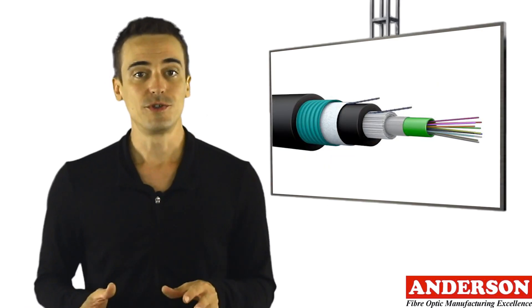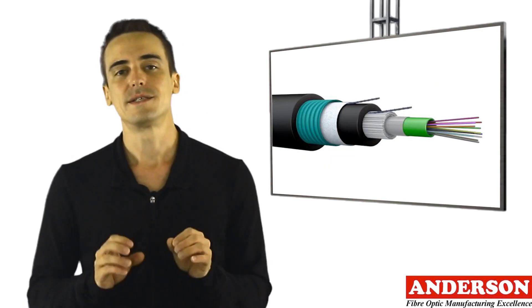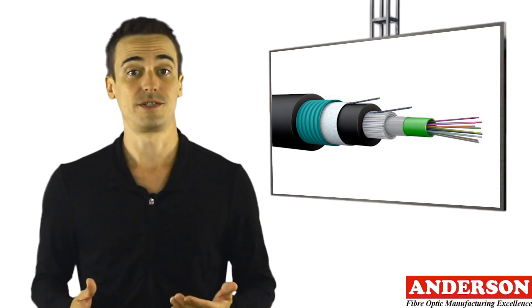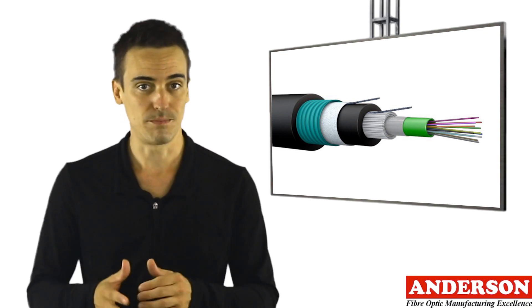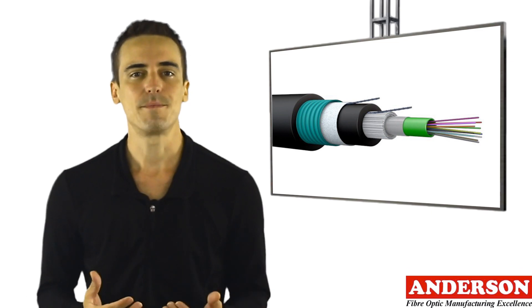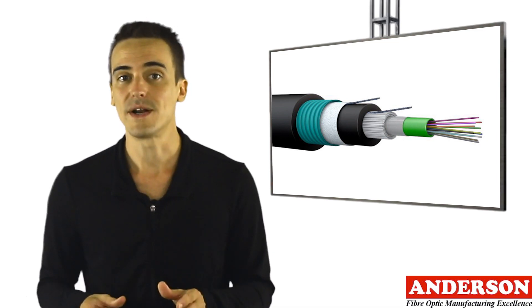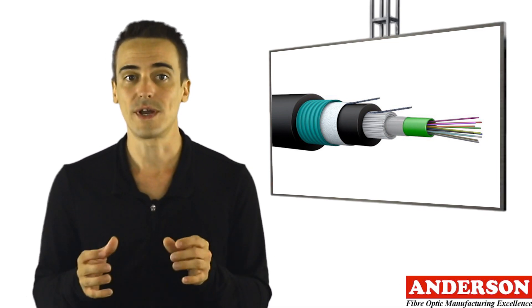The CST cables use corrugated steel tape and are designed for external underground installations in ducts or by direct burial. The corrugated steel tape provides the rodent protection required as they cannot penetrate through the corrugated steel armor.